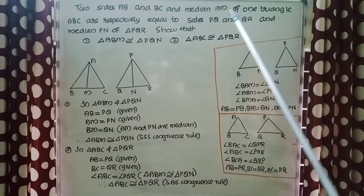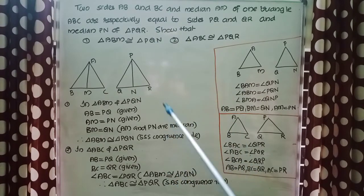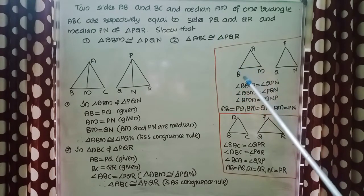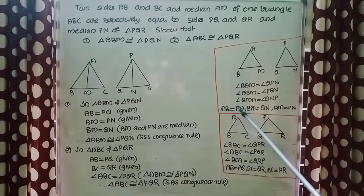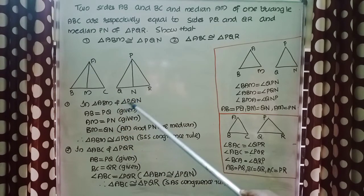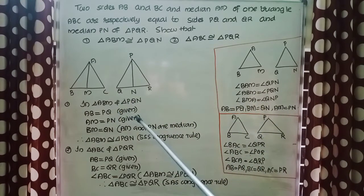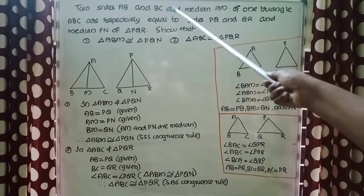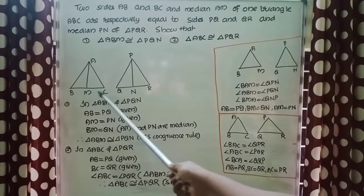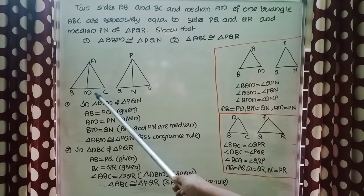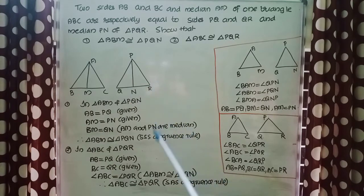From the question, it is given that BC equals QR, and AM equals PN. We can take AB equals PQ and AM equals PN directly from the given. Since BC equals QR, and BM is half of BC while QN is half of QR, we also get BM equals QN.